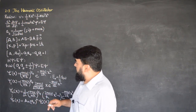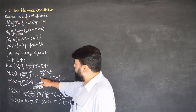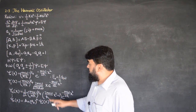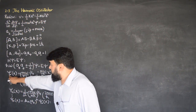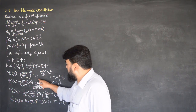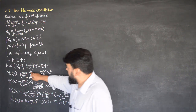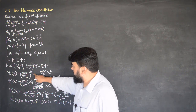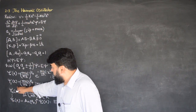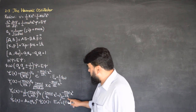We wrote the Hamiltonian in terms of the raising and lowering operators as ℏω times their combination. Then, with the help of the lowering operator a-, we derived the ground state wave function of the harmonic oscillator. By applying the raising operator to the ground state wave function, we obtained ψ₁(x) and normalized this state — the normalization constant and an additional factor came out of the ground state. Similarly, we derived the second excited state wave function.